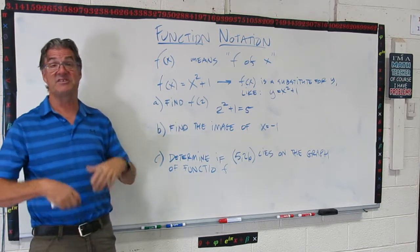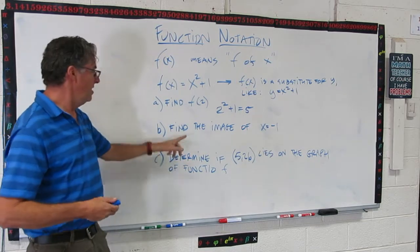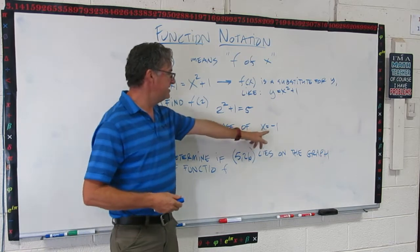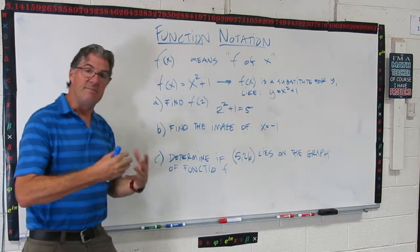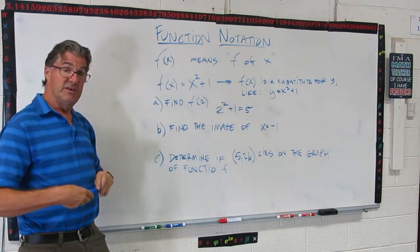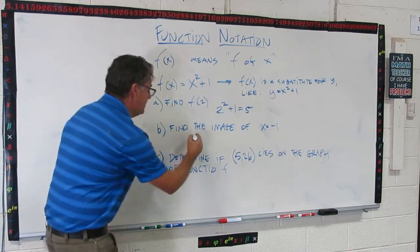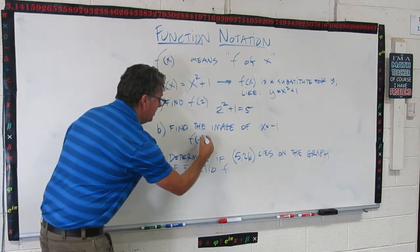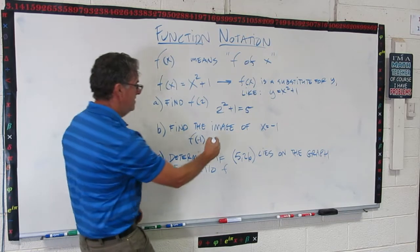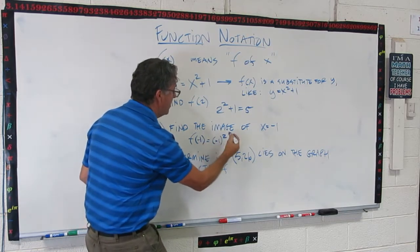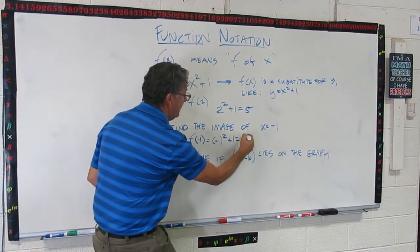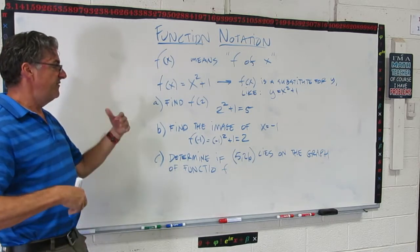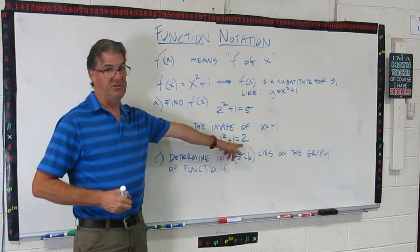Now here's another way that they might ask the same question. Find the image of x = -1. Remember the image is the y value. So this one is just the same thing as saying f(-1), which is going to be (-1)² + 1. And that's 2. So the image of x = -1 is 2.